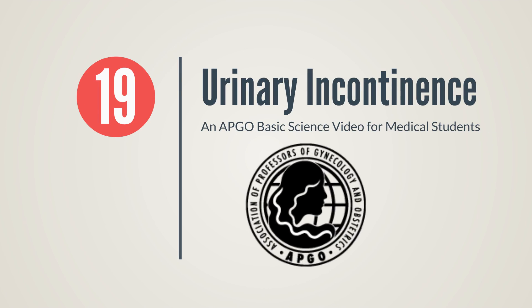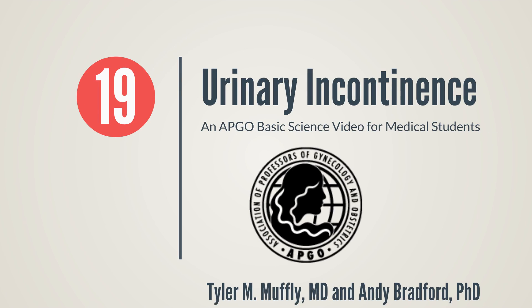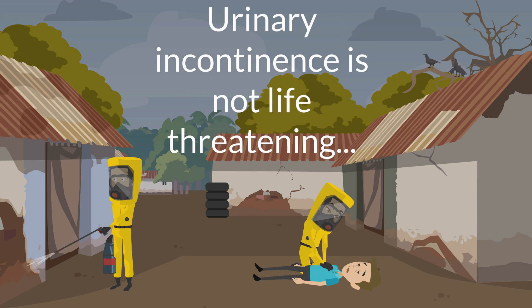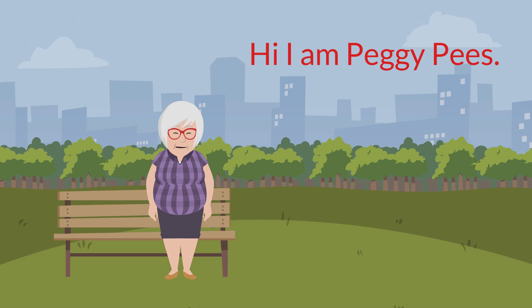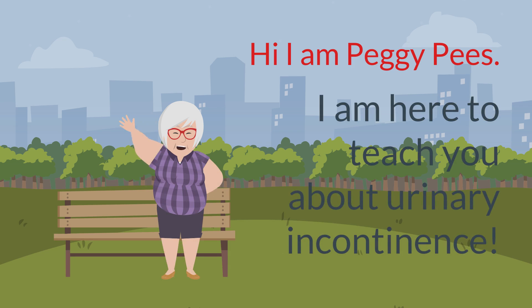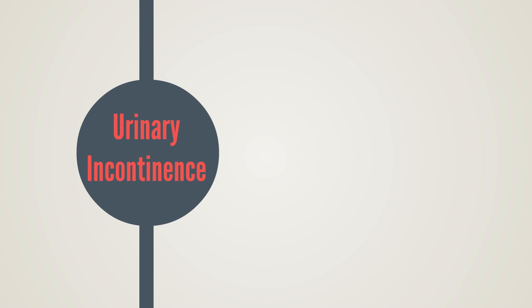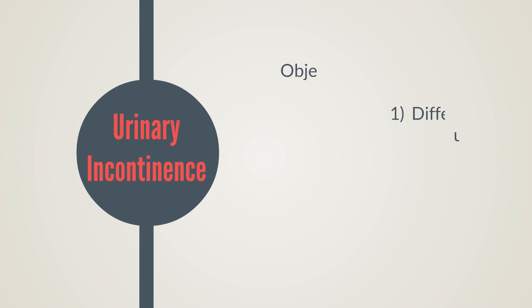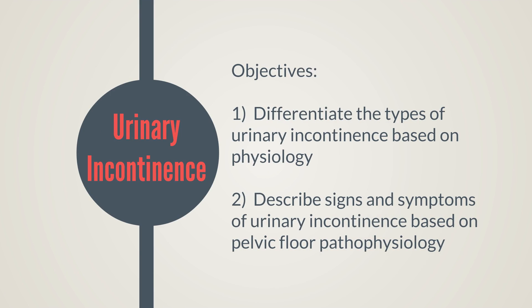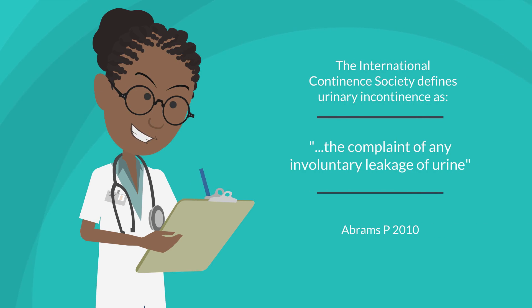Welcome to APCO basic science video number 19 on urinary incontinence. Urinary incontinence is not life-threatening, but leaking urine is lifestyle-threatening. Hi, I'm Peggy Pease, here to teach you about urinary incontinence. The objectives of this video are to differentiate the types of urinary incontinence based on physiology, and describe the signs and symptoms based on pelvic floor pathophysiology. The International Continence Society defines urinary incontinence as the complaint of any involuntary leakage of urine.